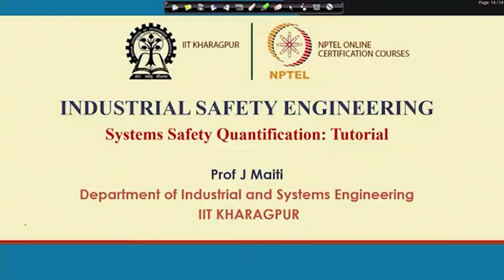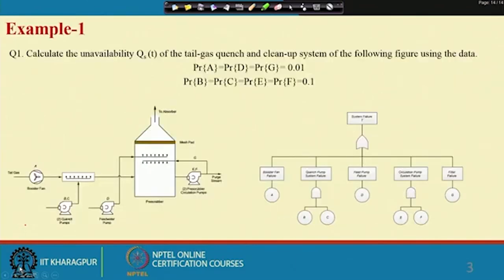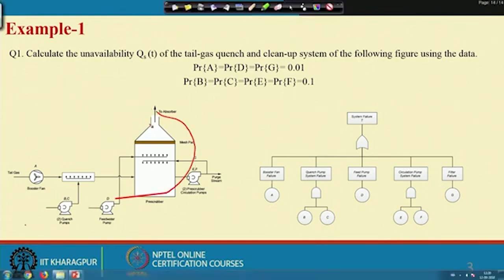Today I will conduct a tutorial session on system safety quantification. This session is not only useful for better understanding of system safety, but it will also help for your upcoming examination. Now I am going straight to the question: calculate the unavailability of the tail gauge quench and clean up system. This system you have already seen. This is the tail gauge quench system and the fault tree of this system is given.